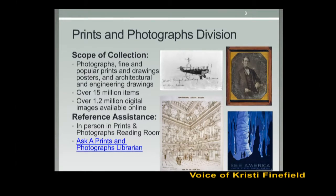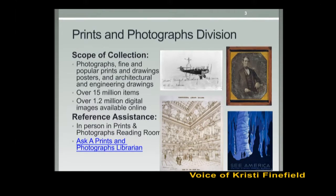More than 1.2 million images are available online through the Library of Congress website, and we'll start by talking about how you can find those images. Guidance and help is available on-site at the Library of Congress in the Prints and Photographs Reading Room, and from off-site through the Ask a Librarian service. On the Library of Congress website there are many places to find visuals, and with the Library of Congress search system you can find visual materials from throughout the Library's divisions.